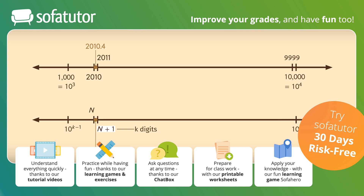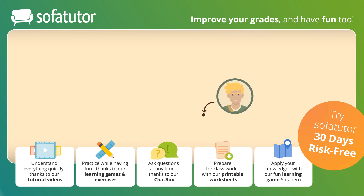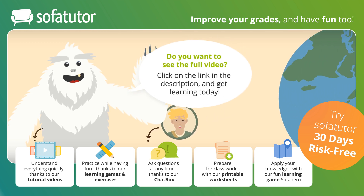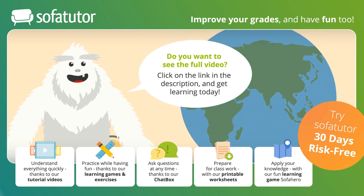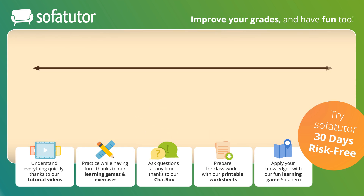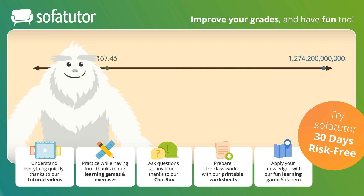A number line also helps us visualize comparing the magnitude of numbers. We know that David is roughly 10 to the 3, or 1,000 times as big as Hans the Ant. But David is a curious naturalist and wonders how big the Earth is compared to himself. Let's use powers of 10 to compare the magnitudes of David and the Earth. Remember, David is 167.45 cm tall. The Earth is a stunning 1,274,200,000,000 cm in diameter.